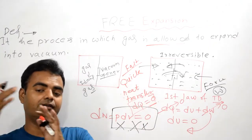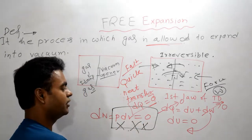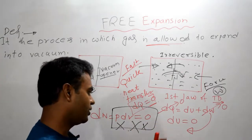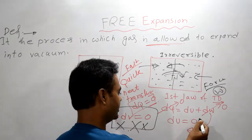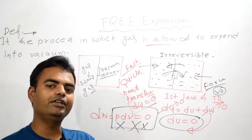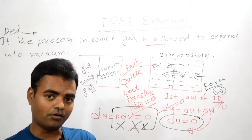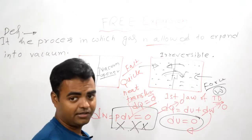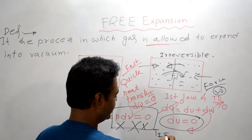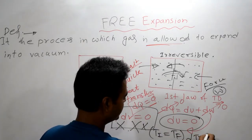Since dU = 0, internal energy is constant. We know that internal energy is a function of temperature only, so we can say that the initial temperature equals the final temperature: Ti = Tf, which means dT = 0.